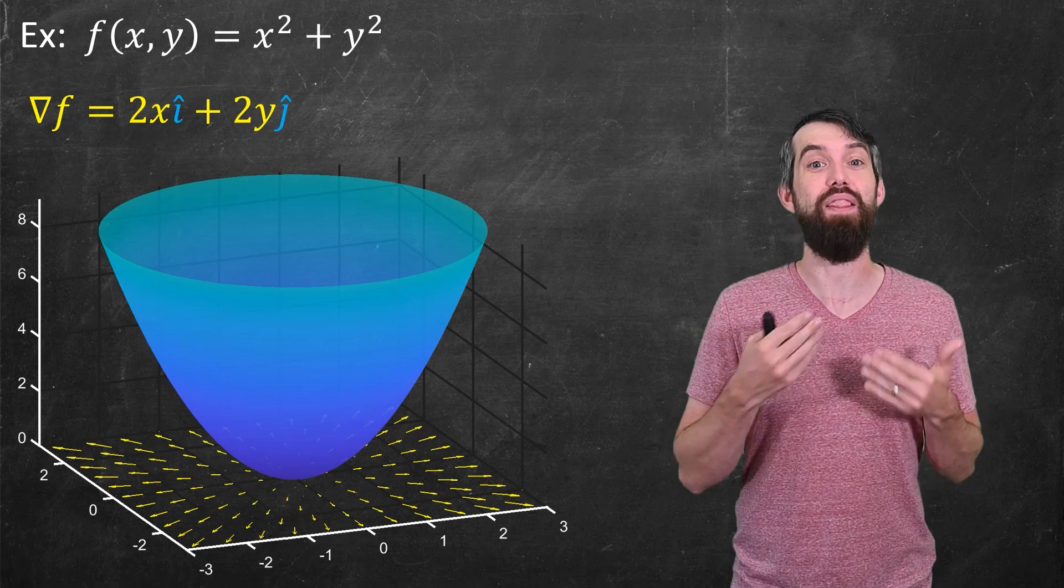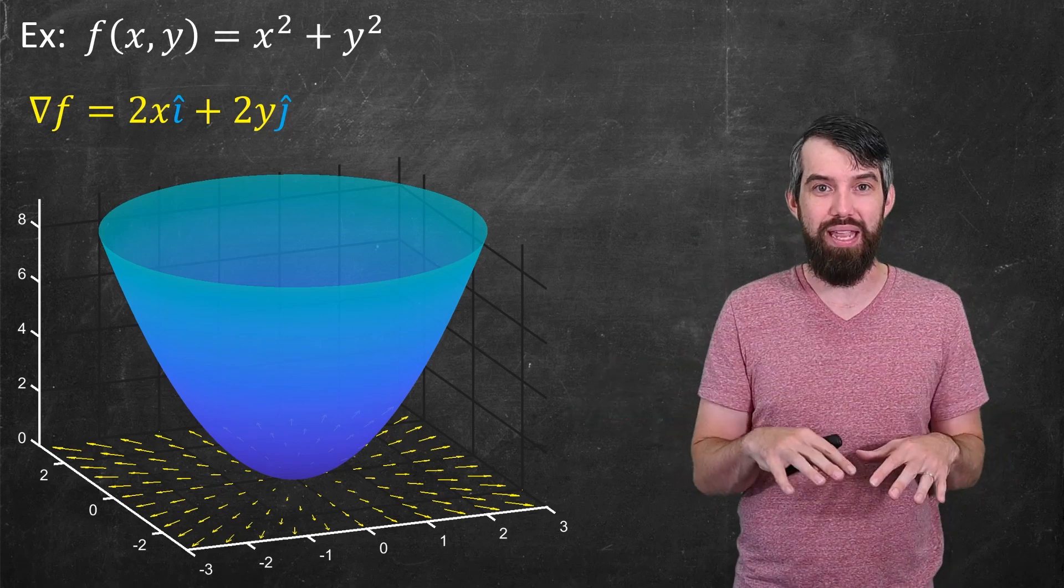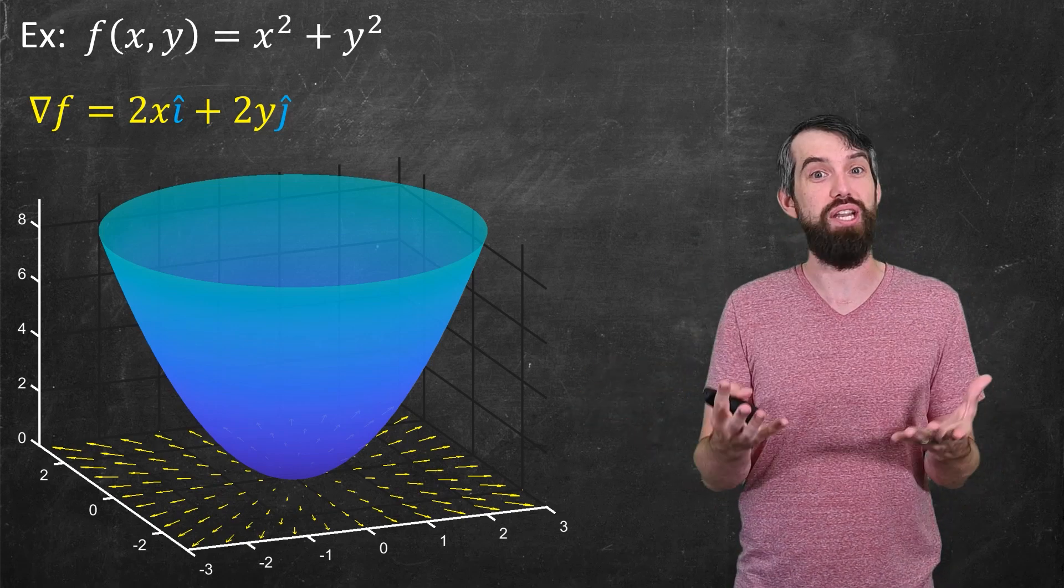we get a vector field in that domain. And so, I've plotted the gradient vector field in the domain, and then this function above the domain.